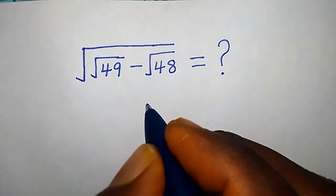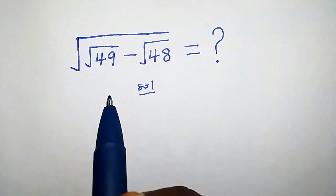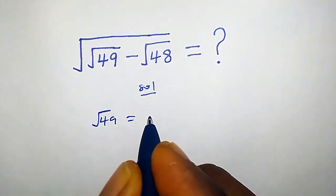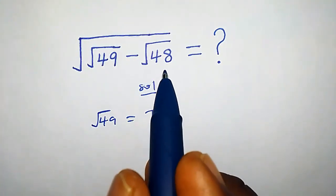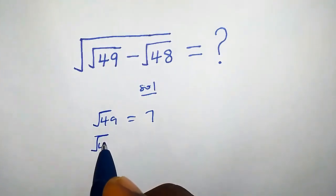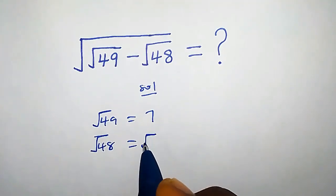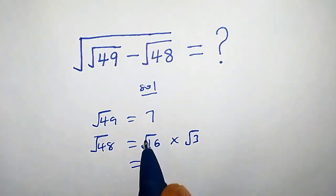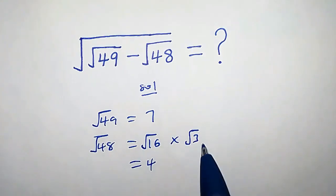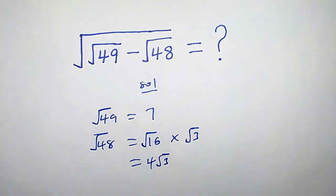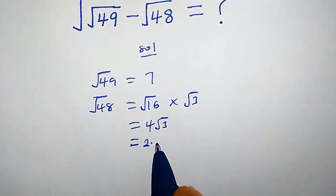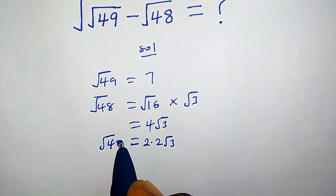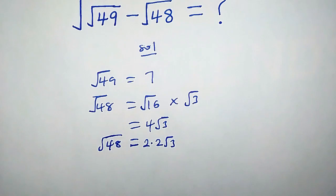How do we simplify this square root solution? Let's consider each part. Square root of 49 is simply 7 — very obvious. Now, square root of 48 can be written as square root of 16 times square root of 3, so this equals 4 times square root of 3, which can also be written as 2 times 2 times square root of 3. So square root of 48 equals 2 times 2 times square root of 3.